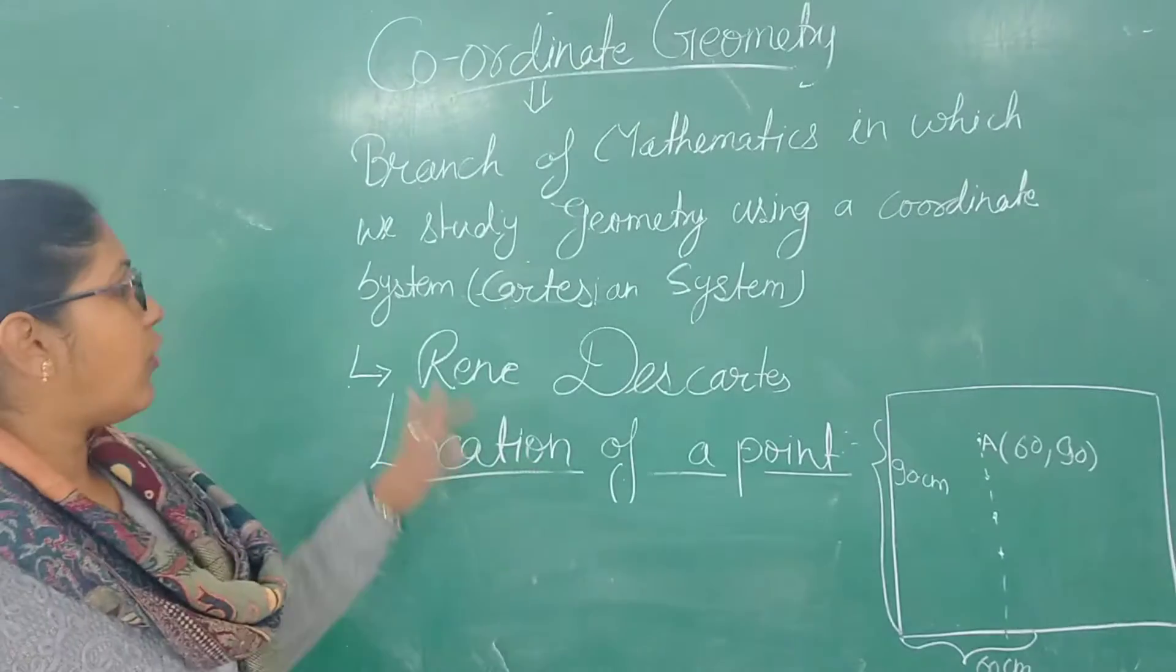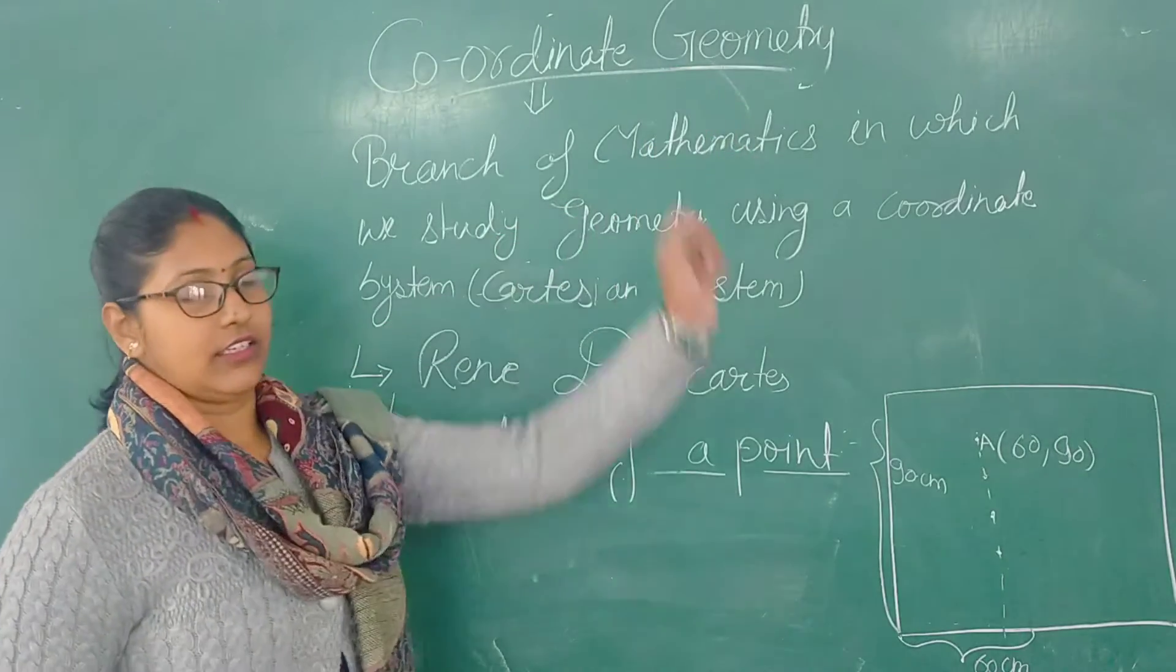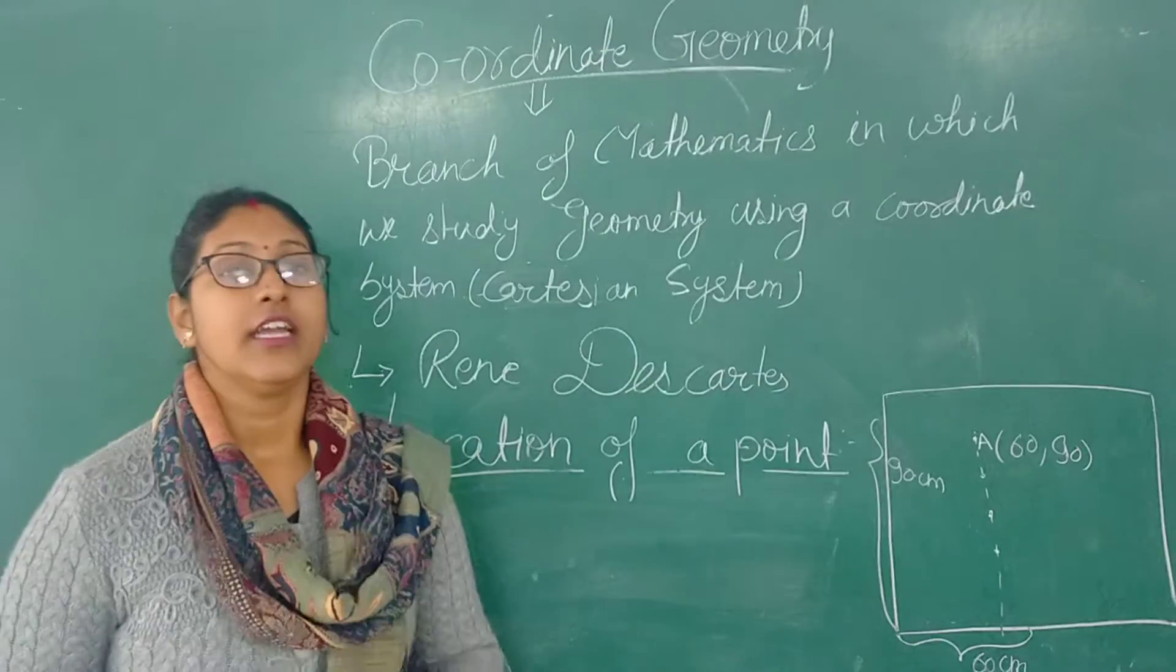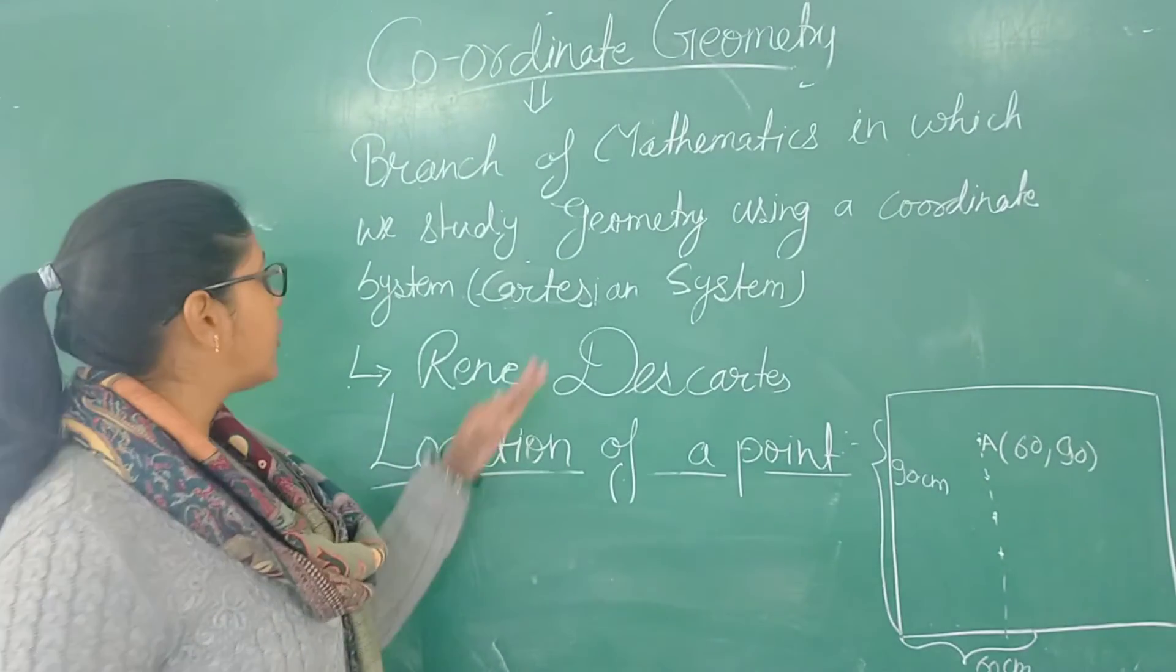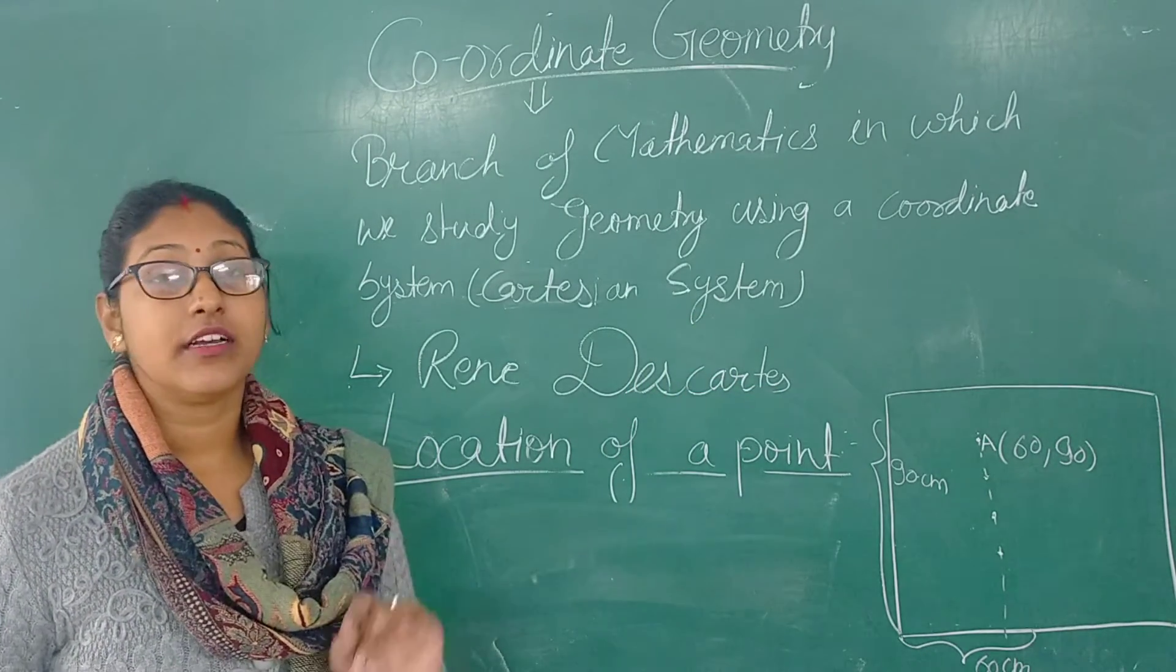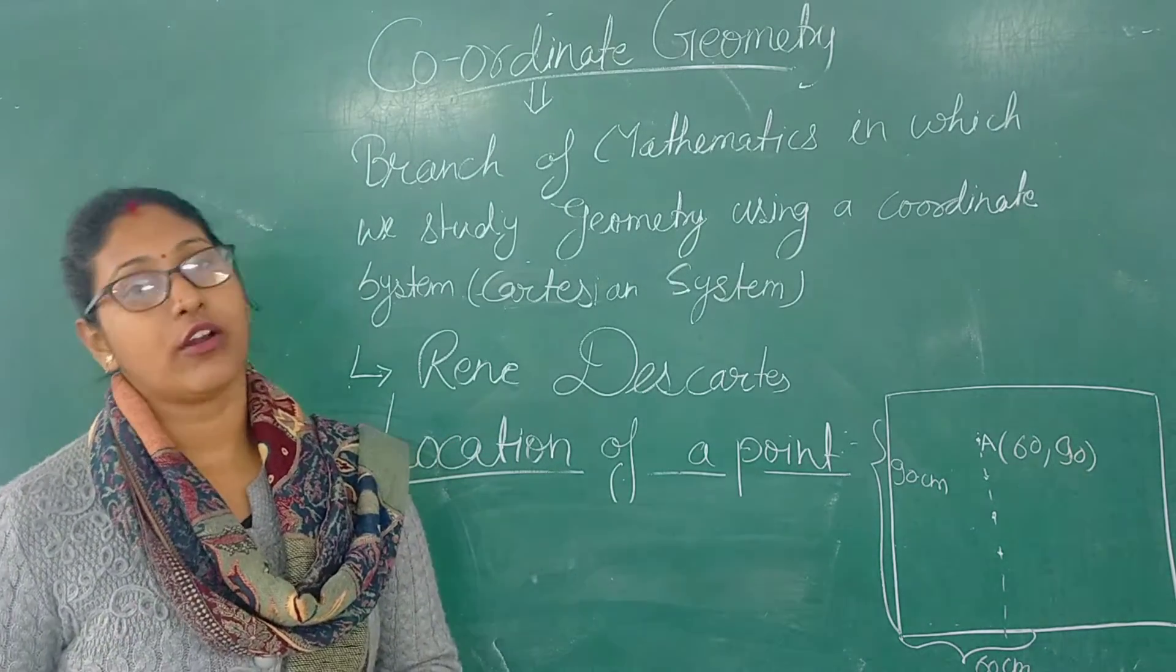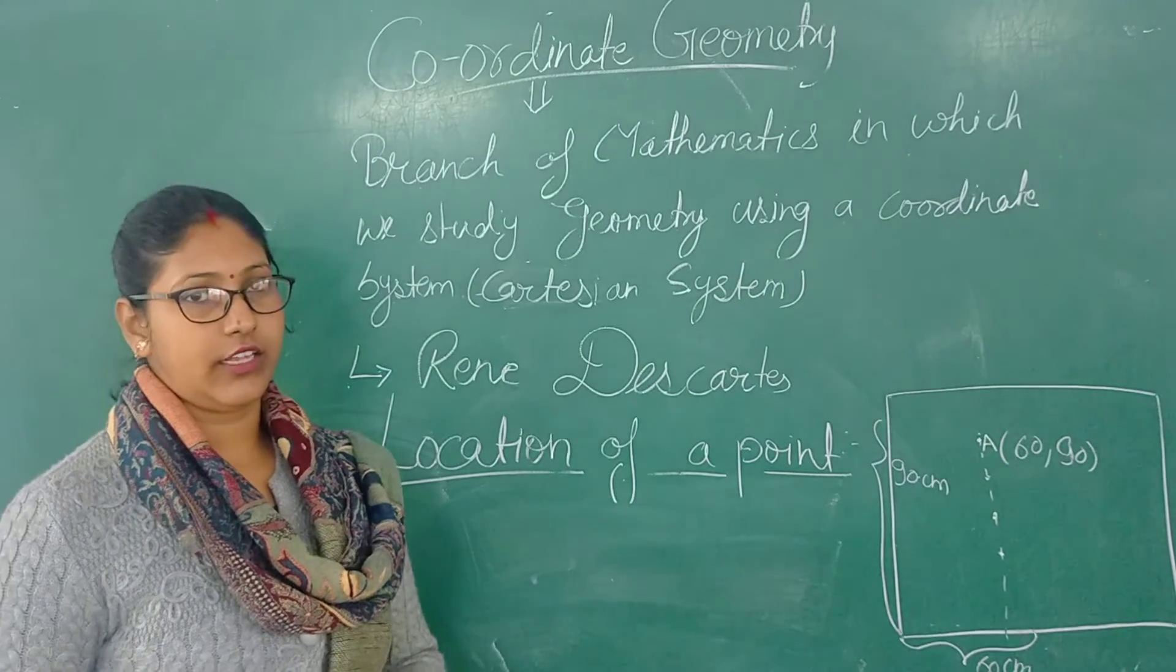So this whole system comes under the branch of mathematics: coordinate geometry. Coordinate geometry is the branch of mathematics in which we are studying geometry with the help of coordinate system or Cartesian system. The Cartesian system is a plane in which we locate any point with the help of horizontal line and vertical line. Thank you.